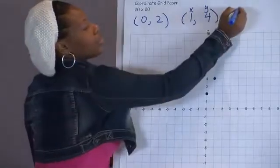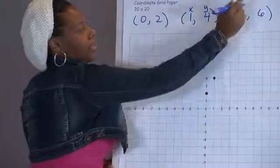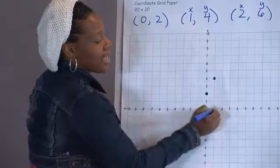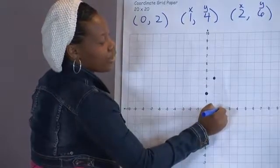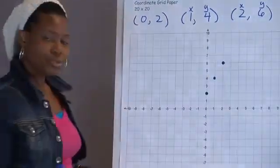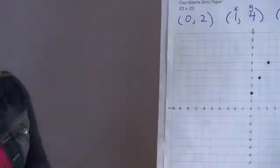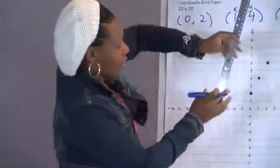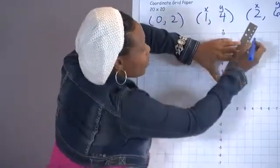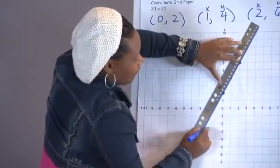Let's do the ordered pair (2, 6). This is my X. This is my Y. I want to find 2 on my X axis and I want to go up to 6. Now, once you have 2 points or more, you can go ahead and connect your points. So I'm going to get my ruler. Make sure that your line hits all the points and then you want to draw your line.